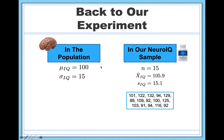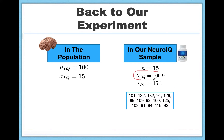So let's go back to our experiment to illustrate where we're headed. We were looking at this supplement, neuro IQ, and basically testing the question of whether neuro IQ is actually effective in changing people's IQ scores. To investigate this question we collected a sample of 15 people, we gave them neuro IQ for 30 days, we measured their IQ, and their scores can be found here. Our sample mean IQ of these people who took neuro IQ for 30 days was 105.9. And this is certainly different than the population average IQ score of 100, but the question is, is it different enough for us to be convinced that neuro IQ actually changes IQ scores?